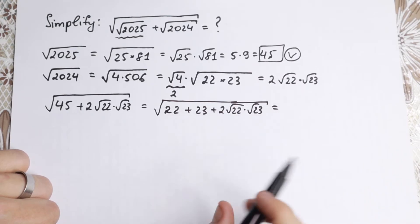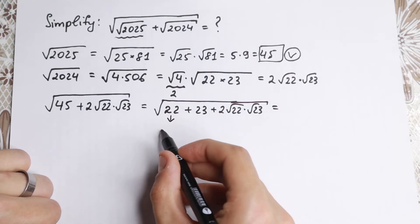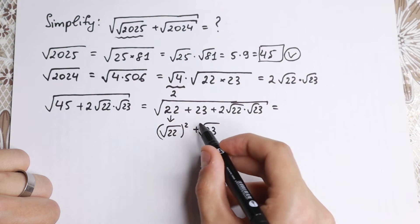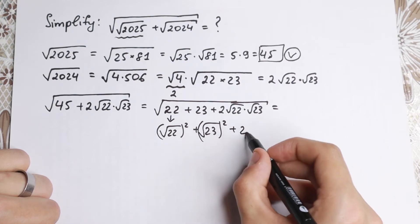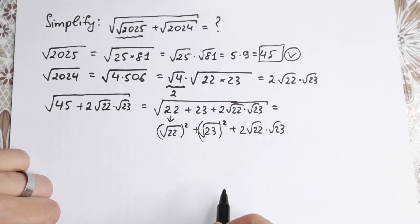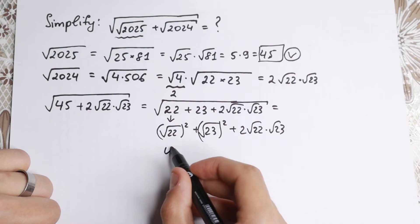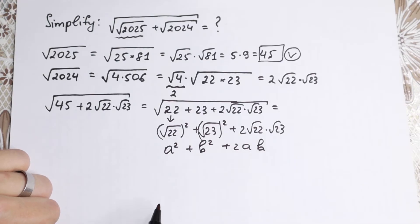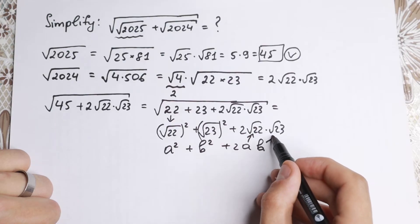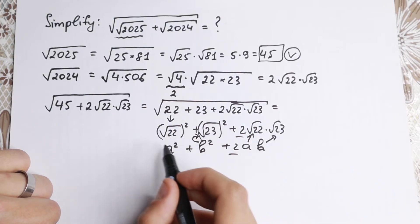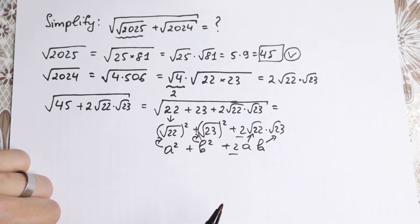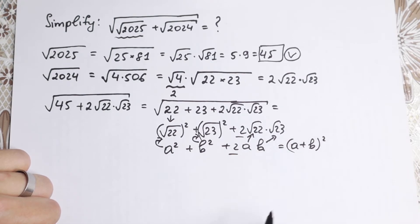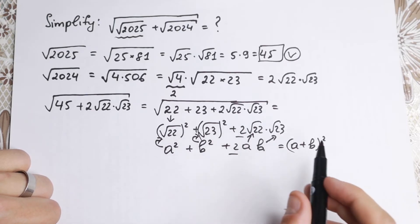I hope you can see a really interesting moment now. We can write 22 as the square root of 22 squared, and 23 as the square root of 23 squared, and the last element is 2 times the square root of 22 times the square root of 23. This matches the identity a² plus 2ab plus b² — this is our a, this is our b — which gives us the formula for (a plus b) squared, where a equals the square root of 22 and b equals the square root of 23.